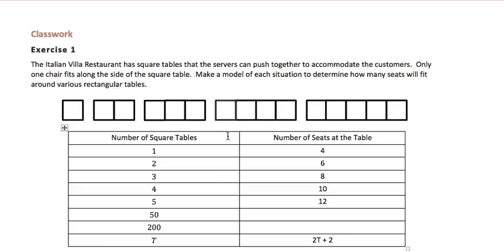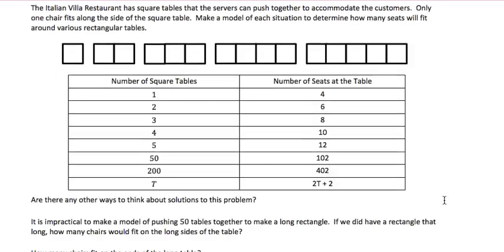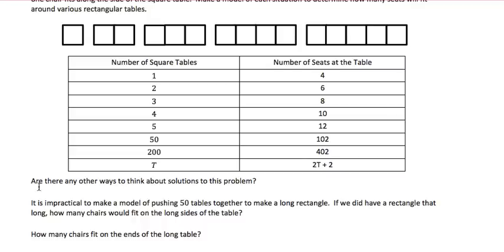So let's look at it again with 4 tables. We have 4 seats on the long side, so 2 times 4 is 8, plus the 2 on either side is 10. So now we can extend it. If there are 50 tables, there would be 50 times 2, which is 100, plus 2 more, which is 102. And if there are 200 tables, it would be 200 times 2, which is 400, plus 2 more.